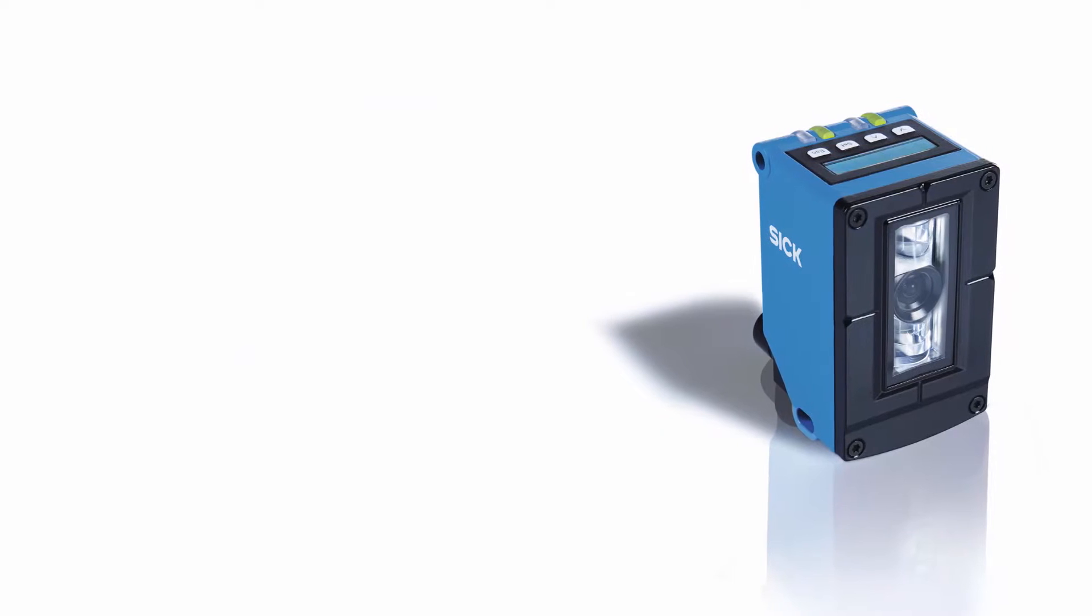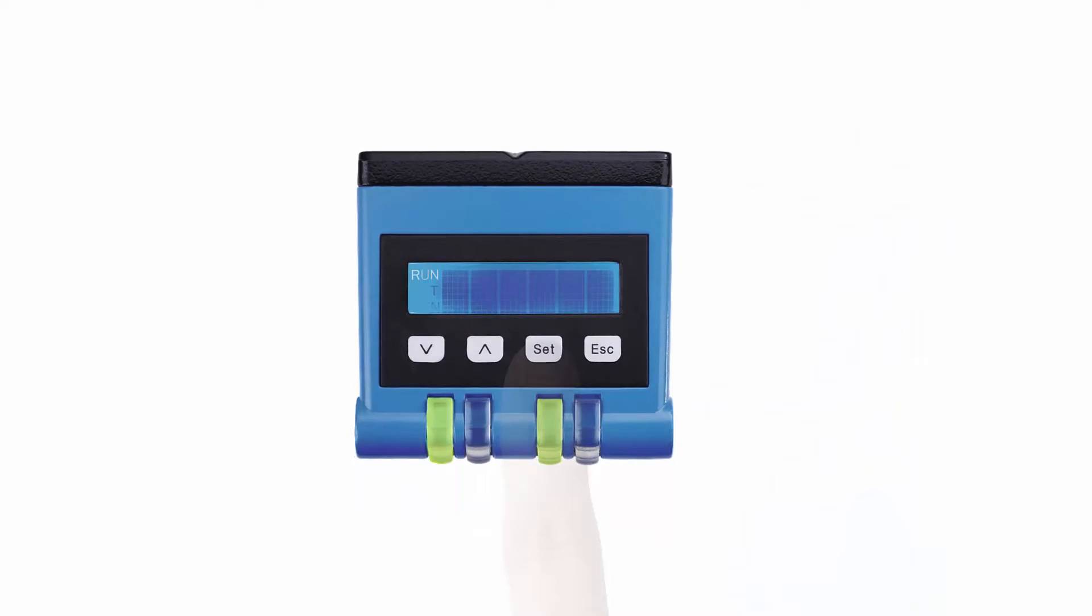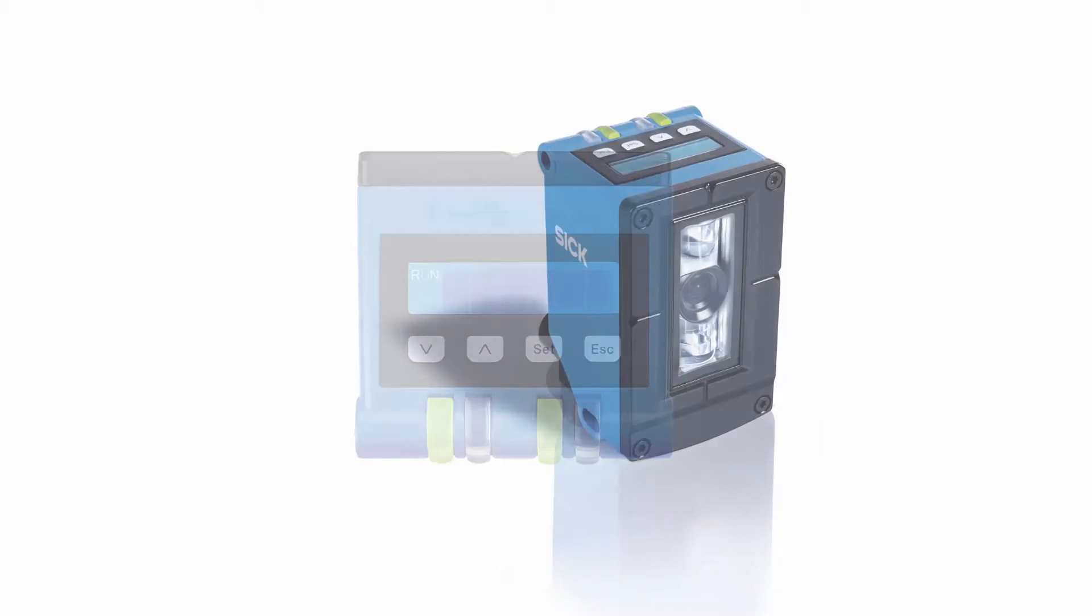With a PS30 sensor, almost each and every function can be set up on the sensor's display. This ensures easy installation and commissioning on the sensor's display directly without the need for any software installation or PLC requirements.